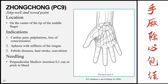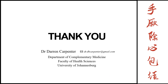The final point of the meridian is Zhongchong, pericardium 9. This is the Jing-well and wood point of the meridian, located on the center of the tip of the middle finger. Indications include cardiac pain, palpitations, and loss of consciousness; aphasia with stiffness of the tongue; and febrile diseases, heat stroke, and convulsions. Insertion is a shallow insertion, 0.1 cun, or prick to bleed. That is the end of the pericardium meridian — one of the shorter meridians with only 9 points. Next we will look at the San Jiao meridian of the hand Shaoyang.